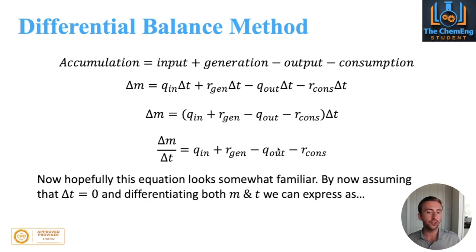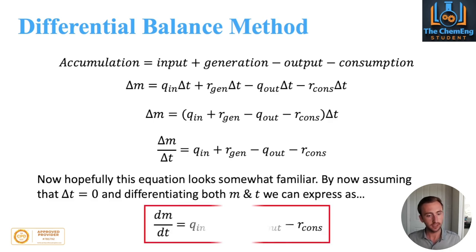What we now need to do is simply state that Δt equals zero. By differentiating both m and t, we can express in the form dm/dt equals Q_in plus r_gen minus Q_out minus r_cons. That is the balance you should be familiar with, especially for the accumulation term as the differential equation of the mass change with respect to time.